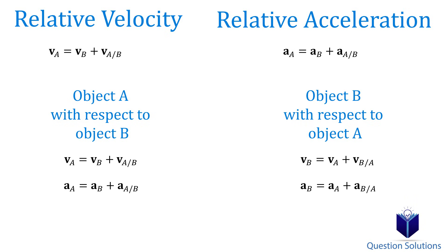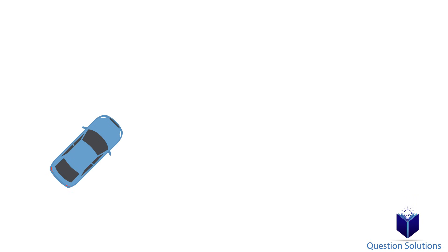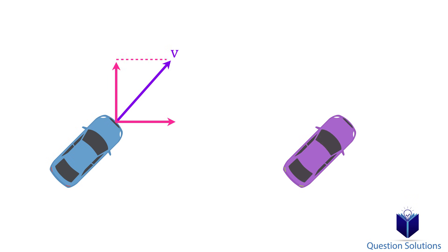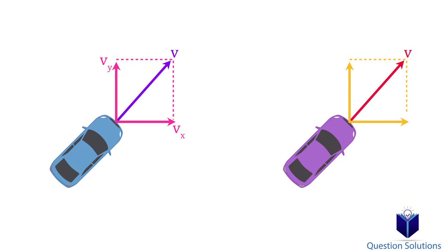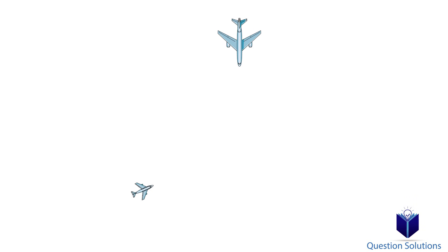The other thing you need to keep in mind is breaking down velocity and acceleration into vector components. What we will do is break the velocity of object A into components, and then the velocity of object B into components, and plug those values into the equations. The same goes for acceleration. So let's go over four examples step by step and see how we can apply these new equations. By the end, you should be able to solve most, if not all, the problems you face in this chapter.